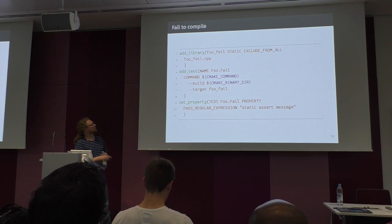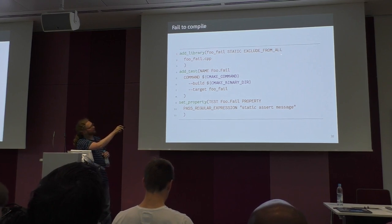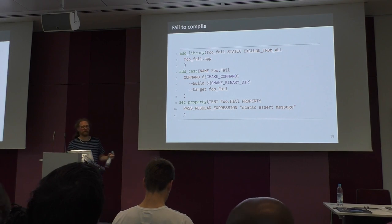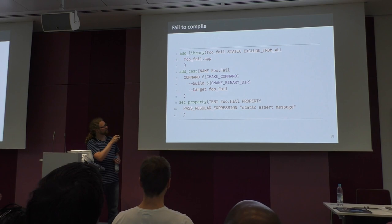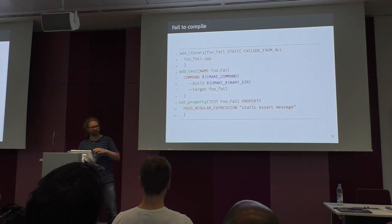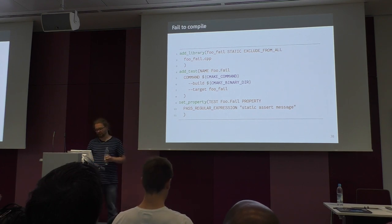In this case, we add a library and exclude it from all — so when you run make all, it won't be built by default. The test actually calls CMake with --build and the target foo_fail, which tries to build the target and hopefully fails with the expected static assertion message.